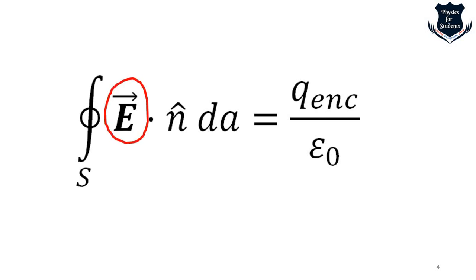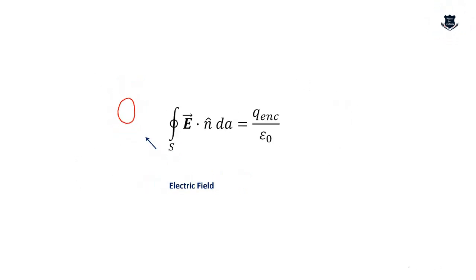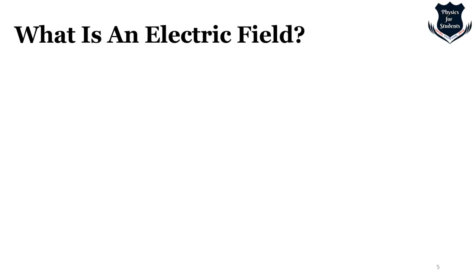Looking at Gauss's law in integral form, the component that goes with the vector represents the electric field. This is what we are going to deal with, along with certain other components. Let us first understand what an electric field is.